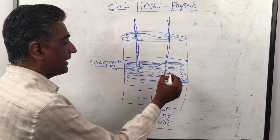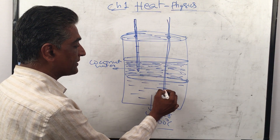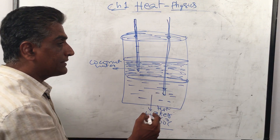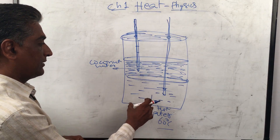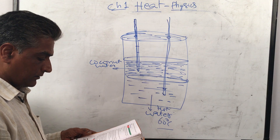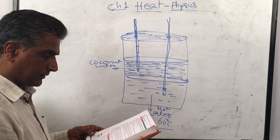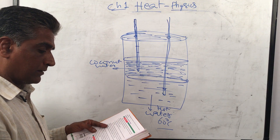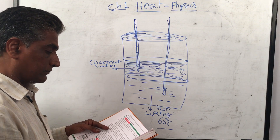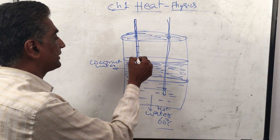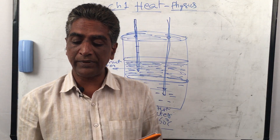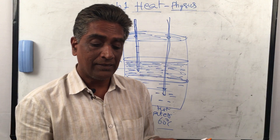Suppose the water thermometer reading was here — it goes down — and the oil thermometer reading increases. The reading in the oil thermometer increases while the reading of the thermometer in the water decreases, because the water is hot.